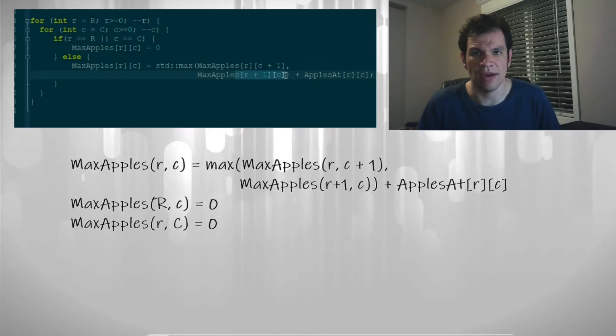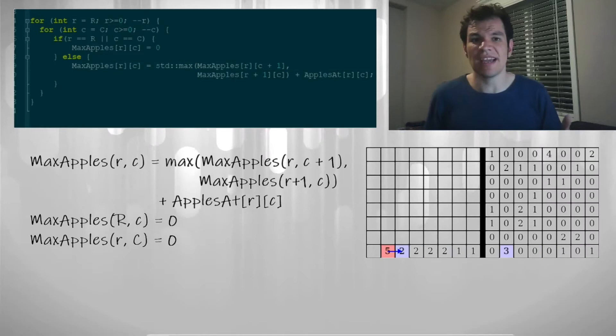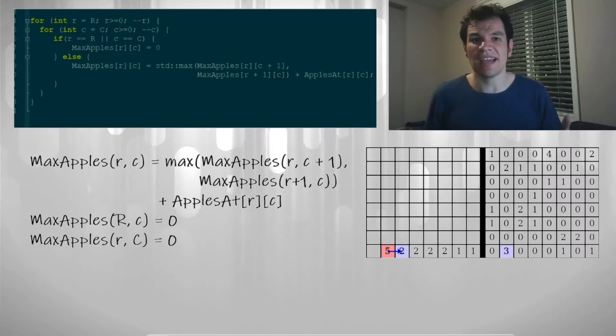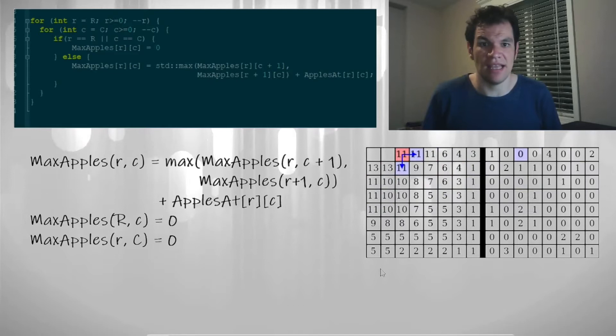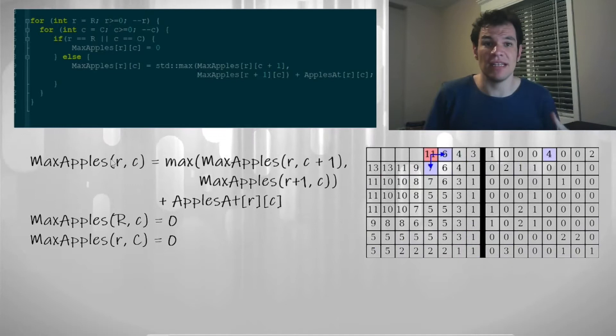And that should be enough to continue. This is a graphical representation of how the table is being built. At the right side, this array here is AppleAt and this other array here is the table that is being computed.